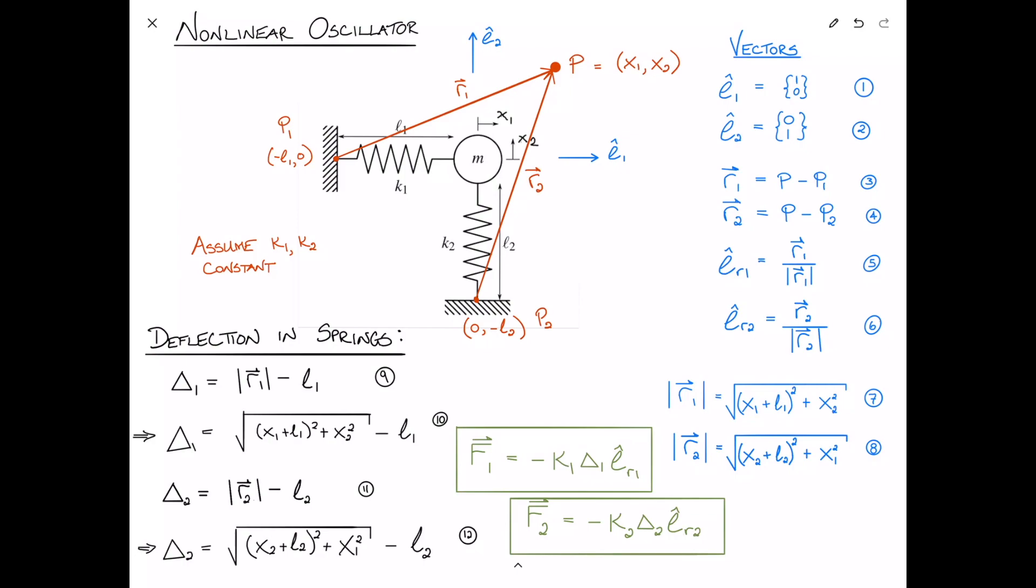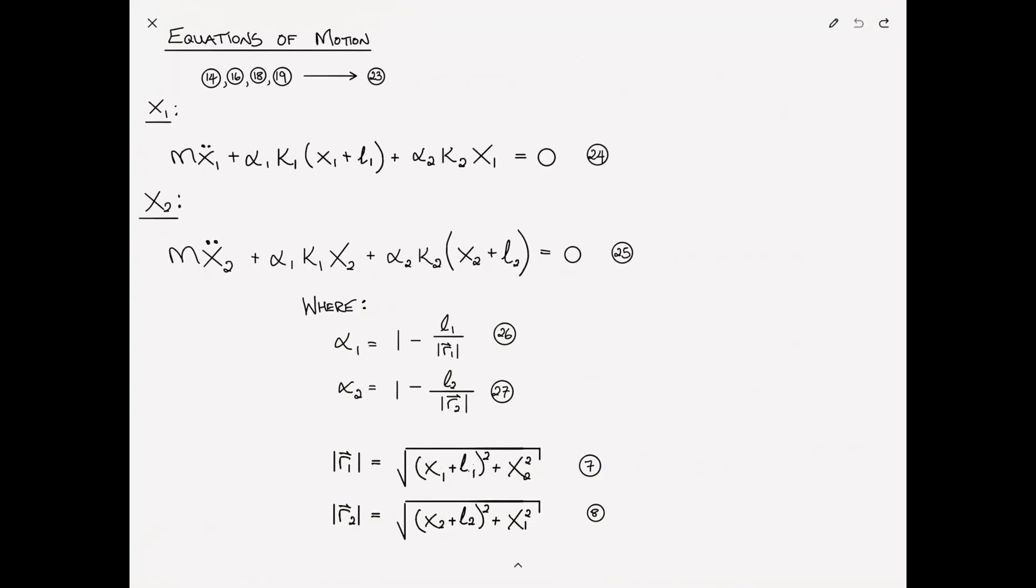And then we're going to take those forces and right here, we're going to just write that MX1 double dot equals, what are the forces? Let's add it together. F1 plus F2 dot E1. That's it.